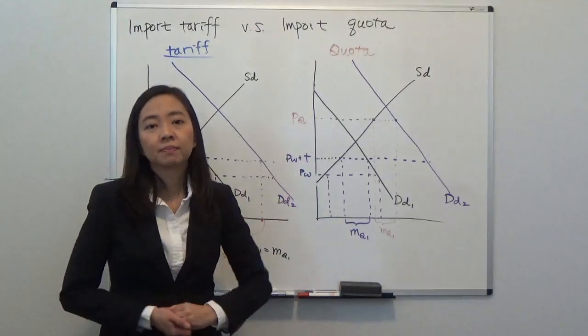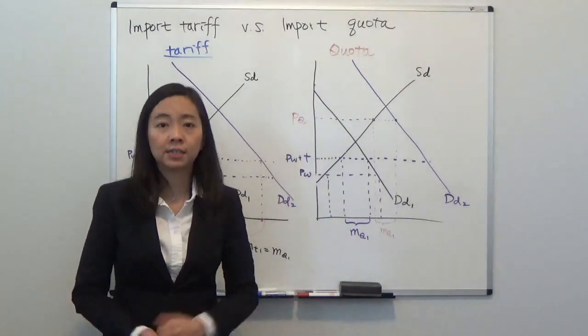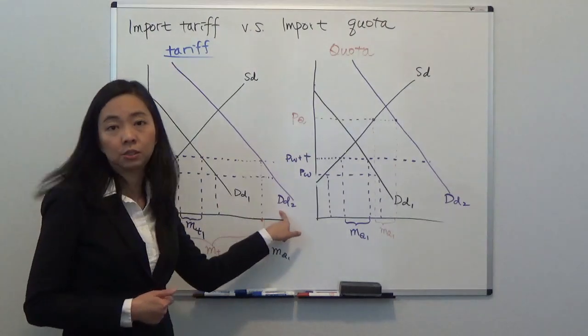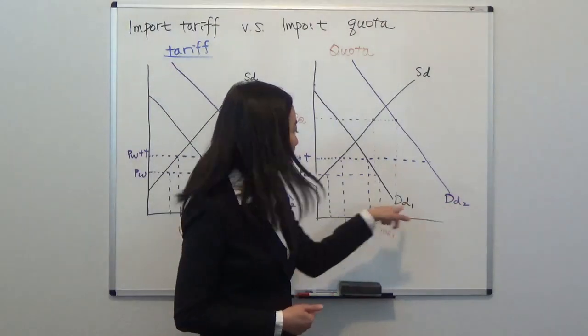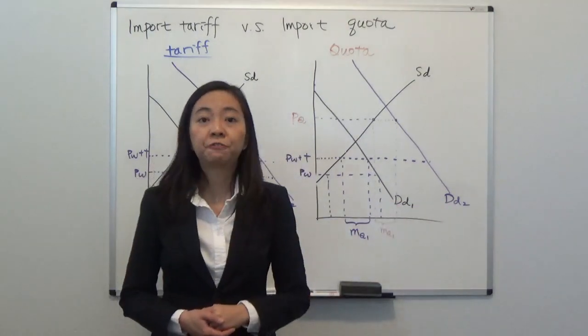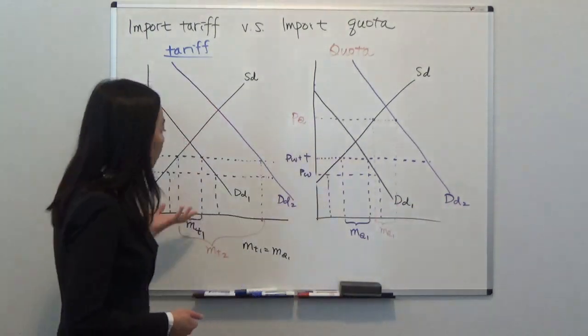The demand goes up from DD1 to DD2. Now the result will be very different because with tariff you can import as much as you want as long as you pay the government the tariff.